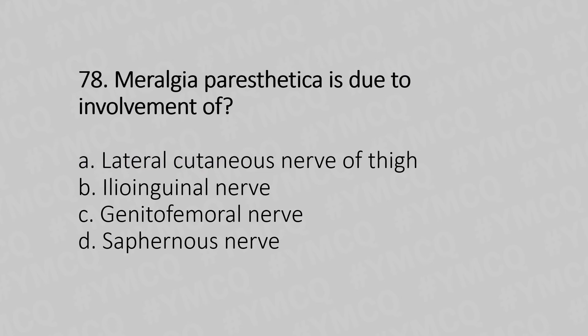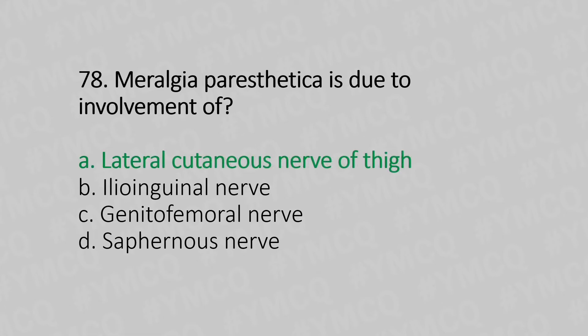Question 78: Meralgia paraesthetica is due to involvement of — option A: lateral cutaneous nerve of the thigh, option B: ilioinguinal nerve, option C: genitofemoral nerve, option D: saphenous nerve. The answer is option A: lateral cutaneous nerve of the thigh.